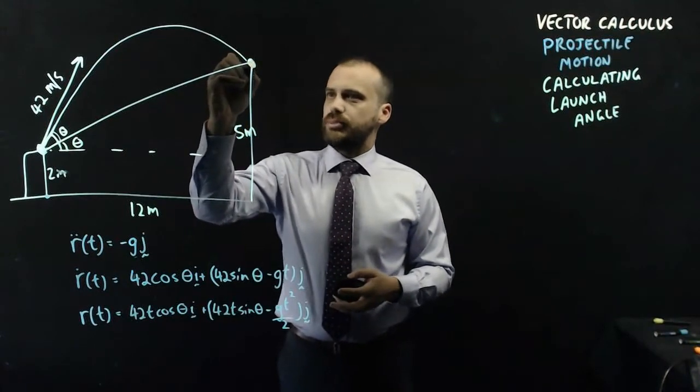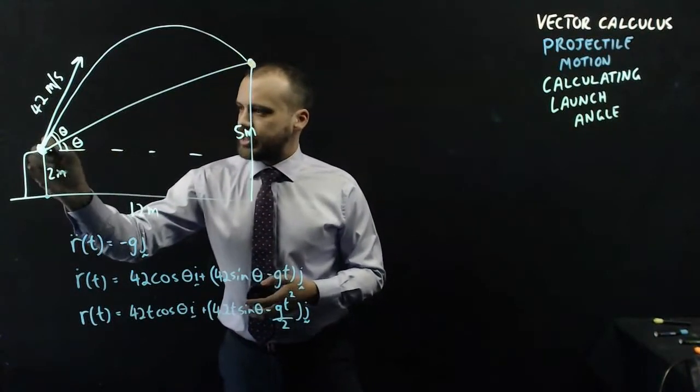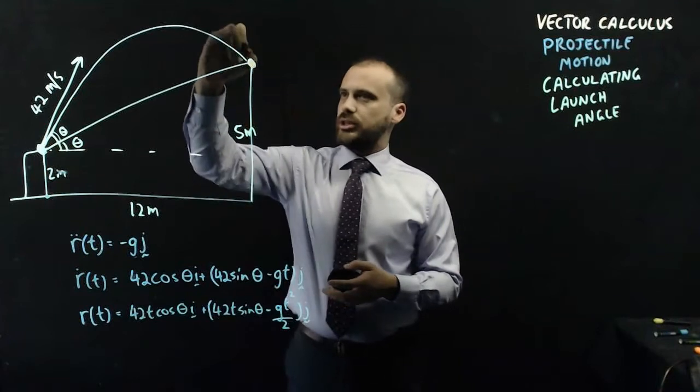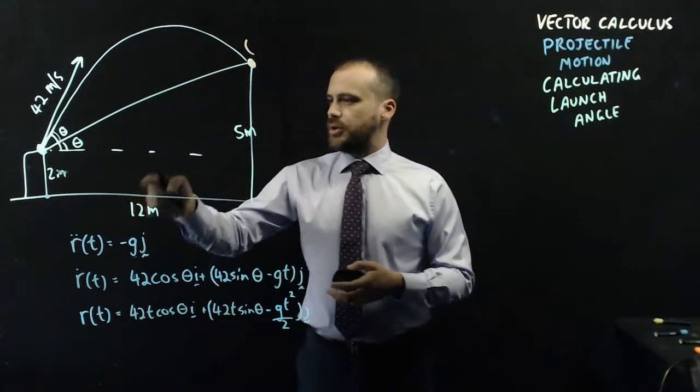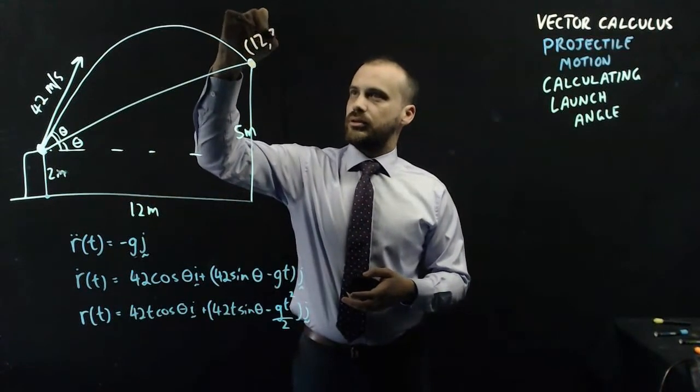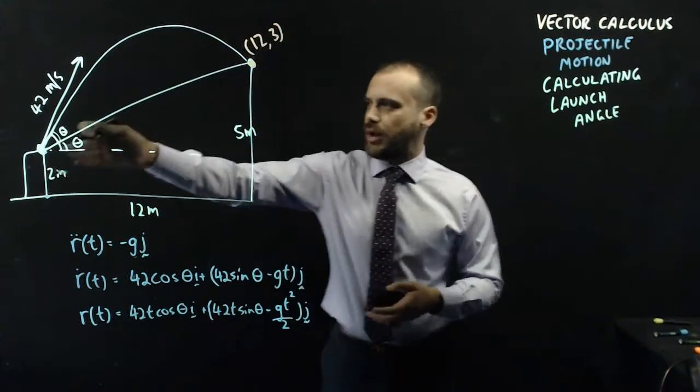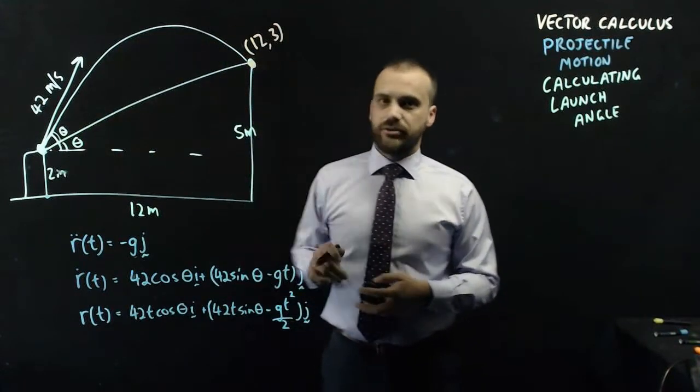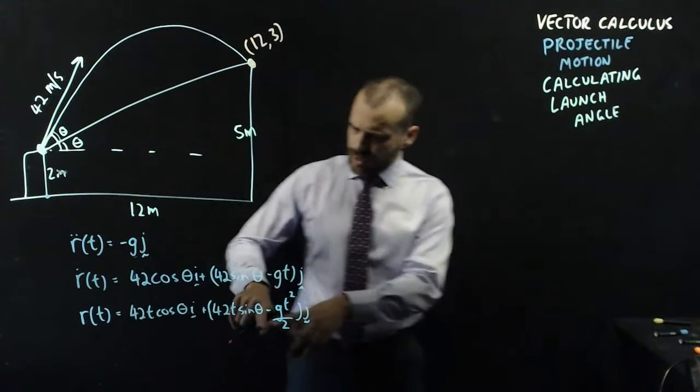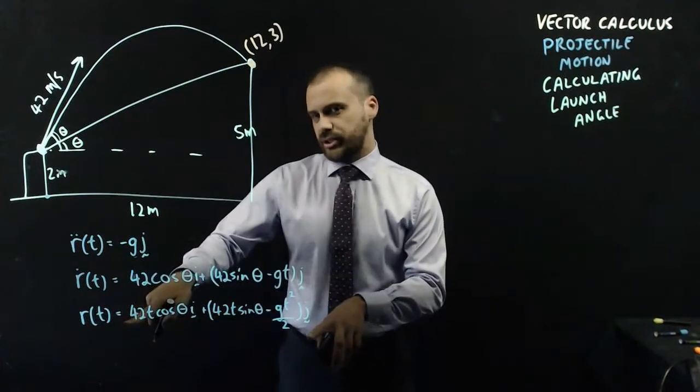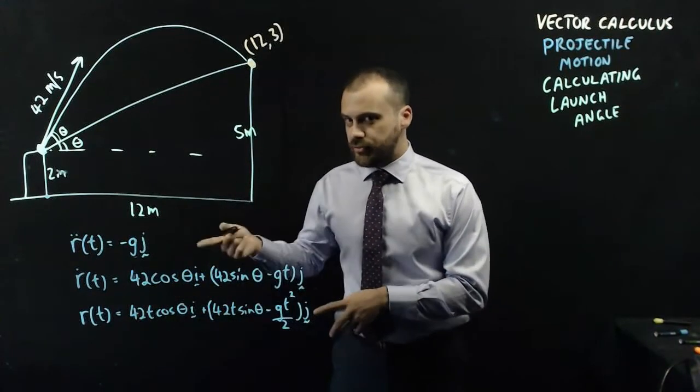And they're both meeting at this point, which, given I've decided that that's the origin, is actually coordinates 12, 3. So what I have is a quadratic passing through point 12, 3. If I could take this vector function and convert it to Cartesian form, that's going to make my life way easier.